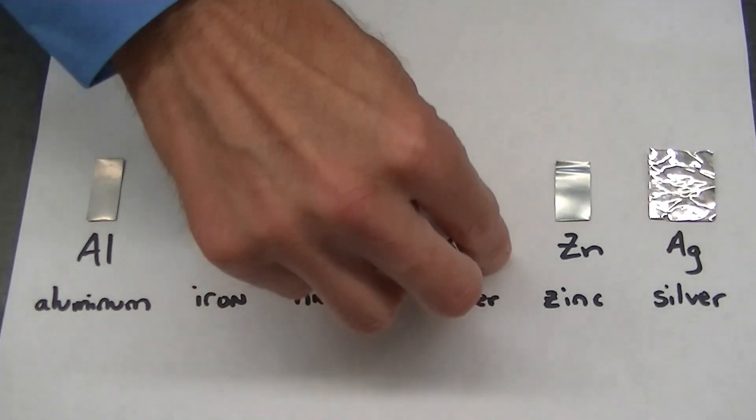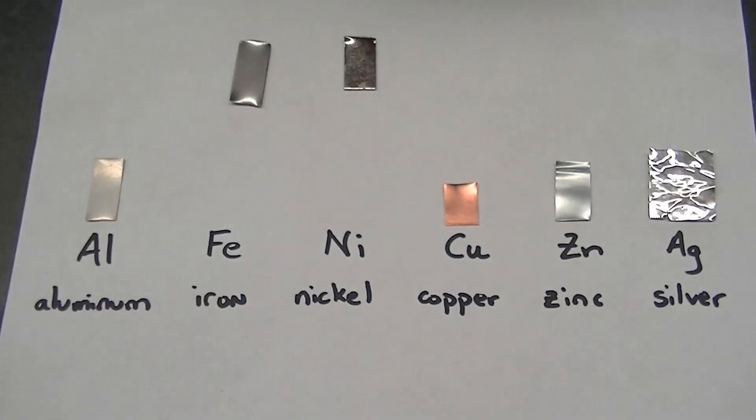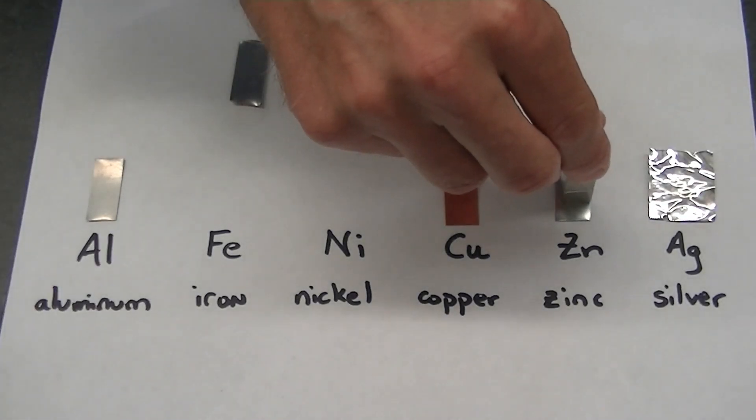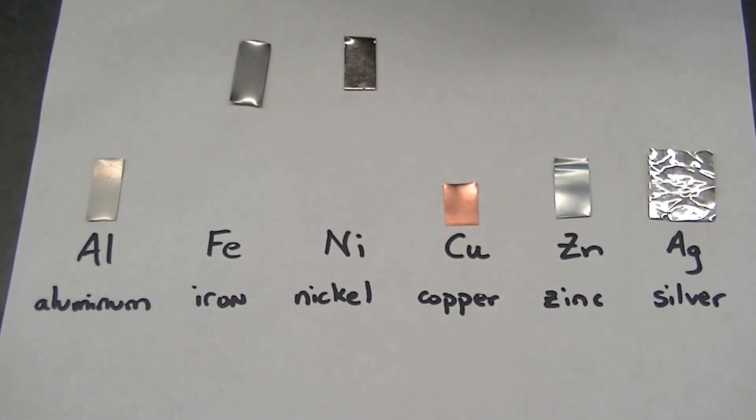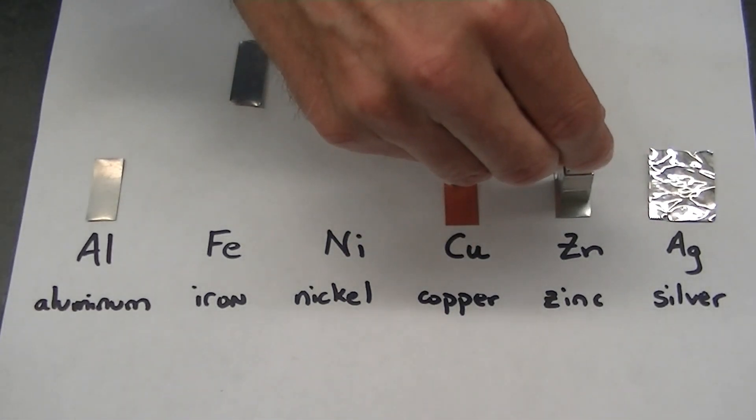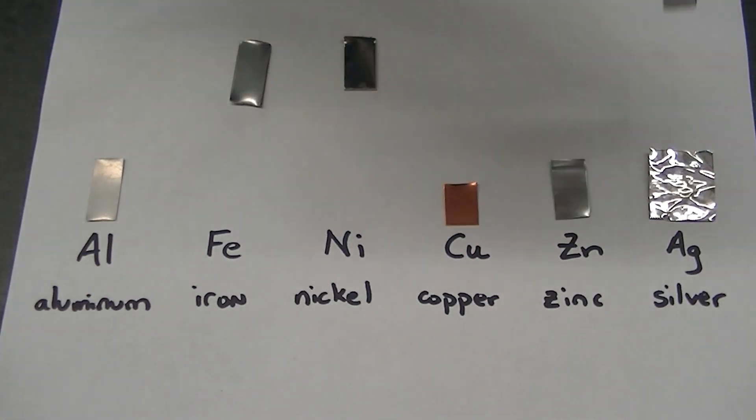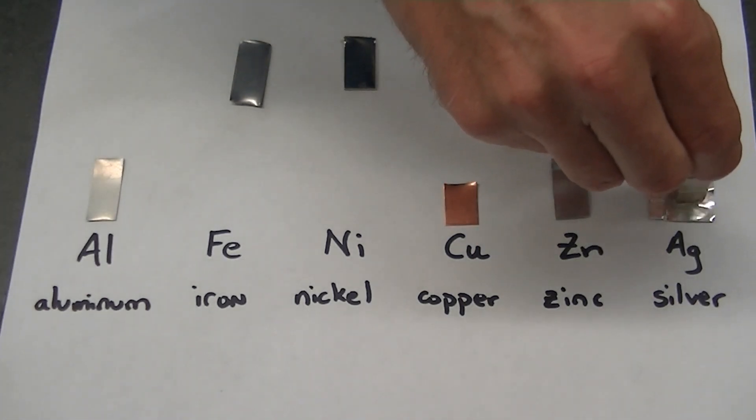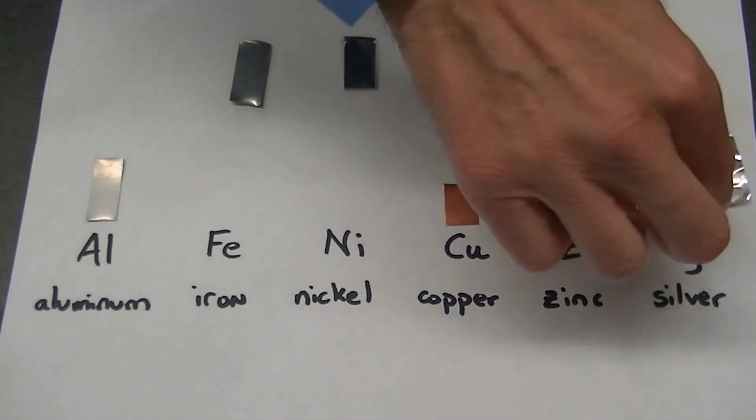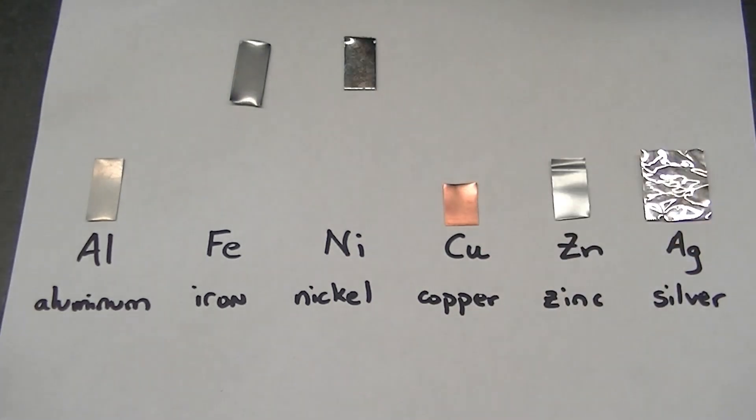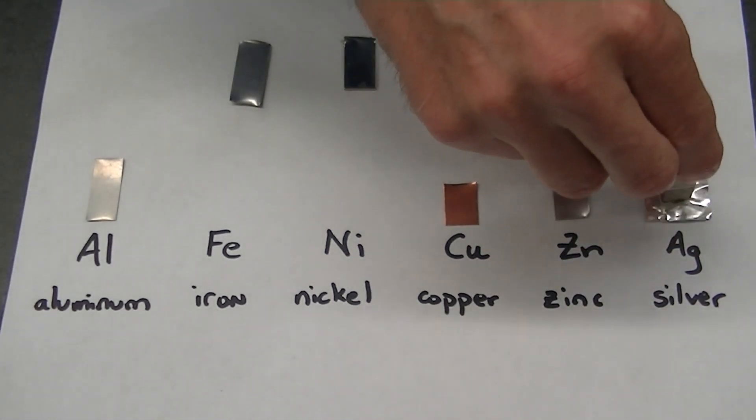So is copper. Zinc doesn't seem to work very well. It's not a very good conductor of electricity. And silver, which is a good conductor of electricity, shows a strong response to this dynamic magnet test.